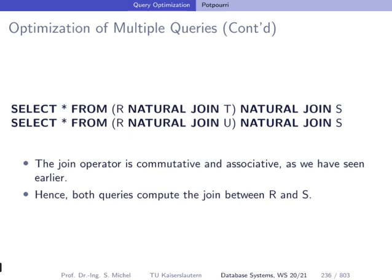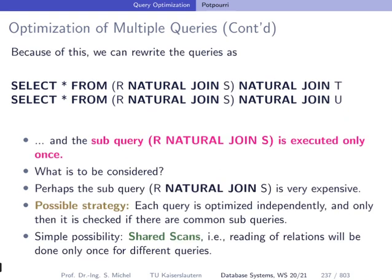Since we know the join operator is commutative and associative, we see that we are actually computing the join between R and S twice. So in query optimization we can compute that join only once and rewrite both queries to make use of this pre-computed join. We now have R join S executed only once, and then for the first query we take the result and join it with T, and for the second query we join it with U.